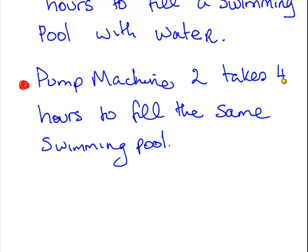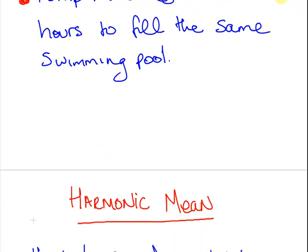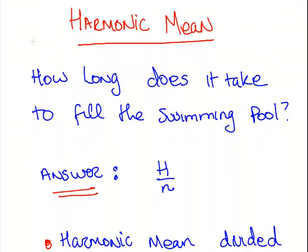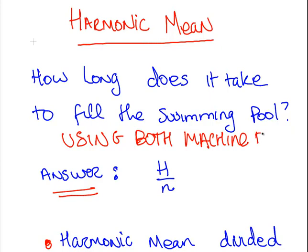The second machine would take 4 hours to fill the swimming pool with water. So 4 and 6. What's the harmonic mean of that? What we're interested in here is how long does it take to fill the swimming pool if using both machines together?